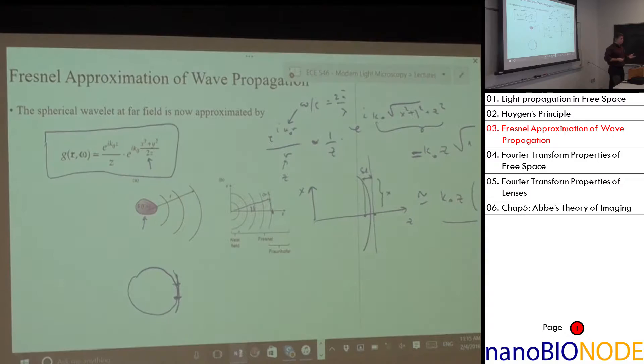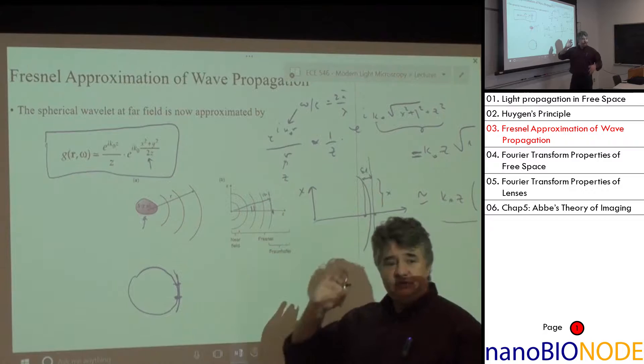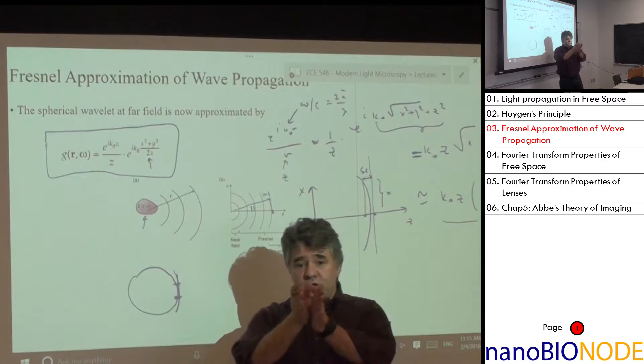We make things look like a Gaussian whenever we can, because we know how to take Fourier transforms of Gaussians. Once you know the approximation, in this case we're looking farther from the source where the angles of diffraction are small.